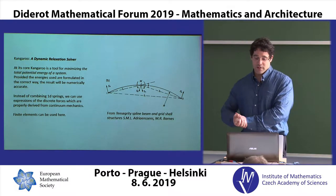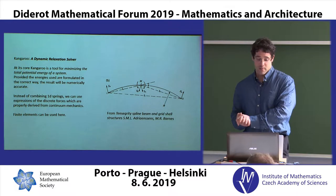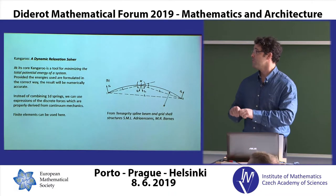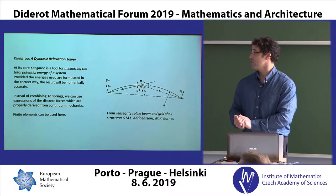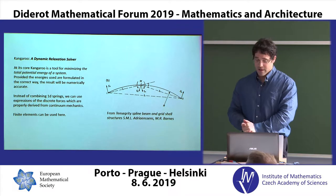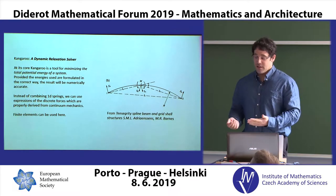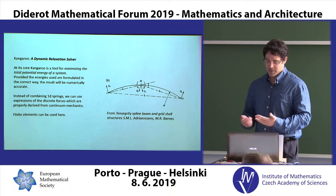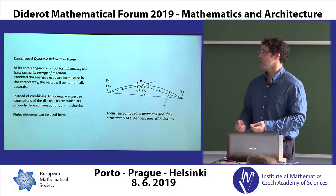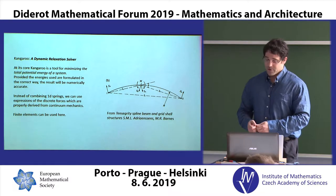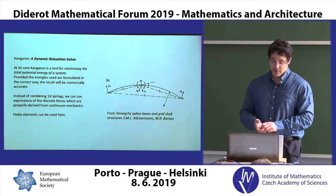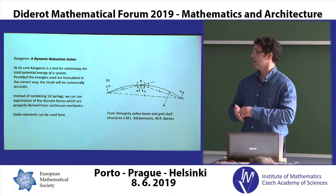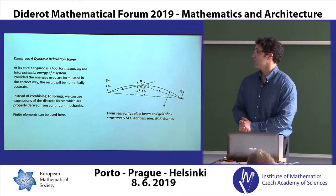That's something which is relatively easy to minimise and can also correspond to actual elastic properties. So if you define these energies in the right way — for example, the model for beam bending or spline bending in Kangaroo comes from a paper by Adrinsons and Barnes — and if you build up the energy in this way, then when you minimise it you'll get a correct elastic curve for a thin rod. That was actually the real starting point, an example piece of code by Chris that inspired the whole of Kangaroo.